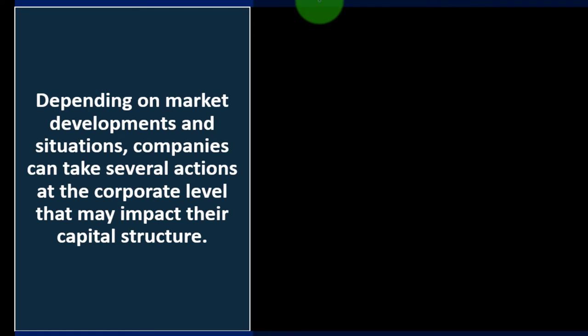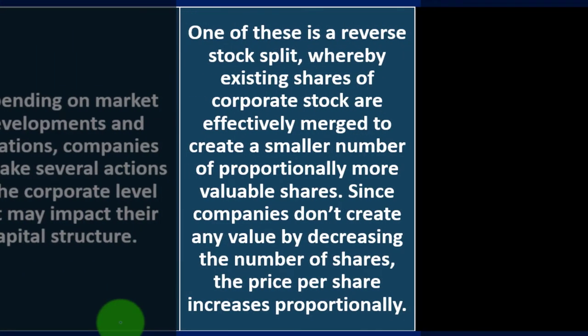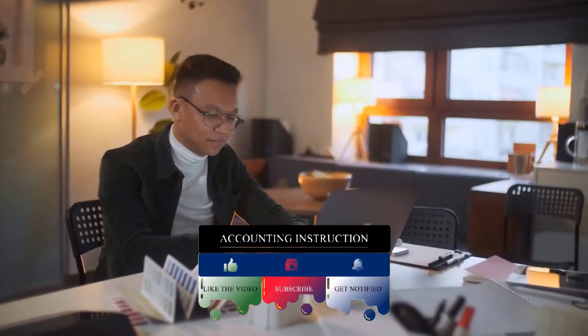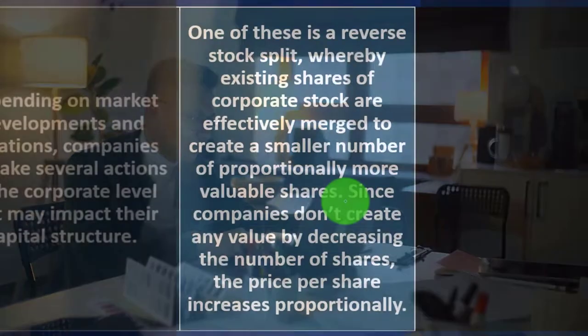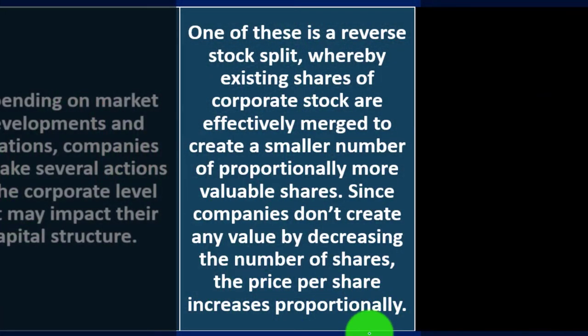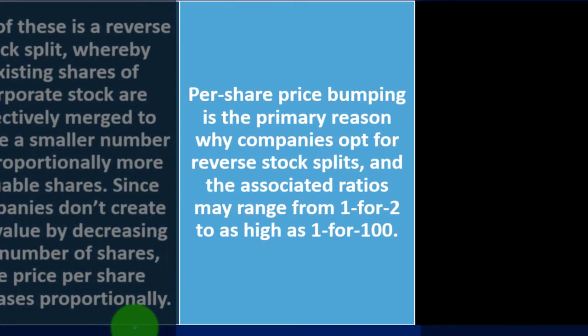Depending on market developments and situations, companies can take several actions at the corporate level that may impact their capital structure. One of these is a reverse stock split, whereby existing shares are effectively merged to create a smaller number of proportionately more valuable shares. Since companies don't create any value by decreasing the number of shares, the price per share increases proportionately. Per share price bumping is the primary reason why companies opt for reverse splits, and the associated ratio may range from 1-for-2 to as high as 1-for-100.